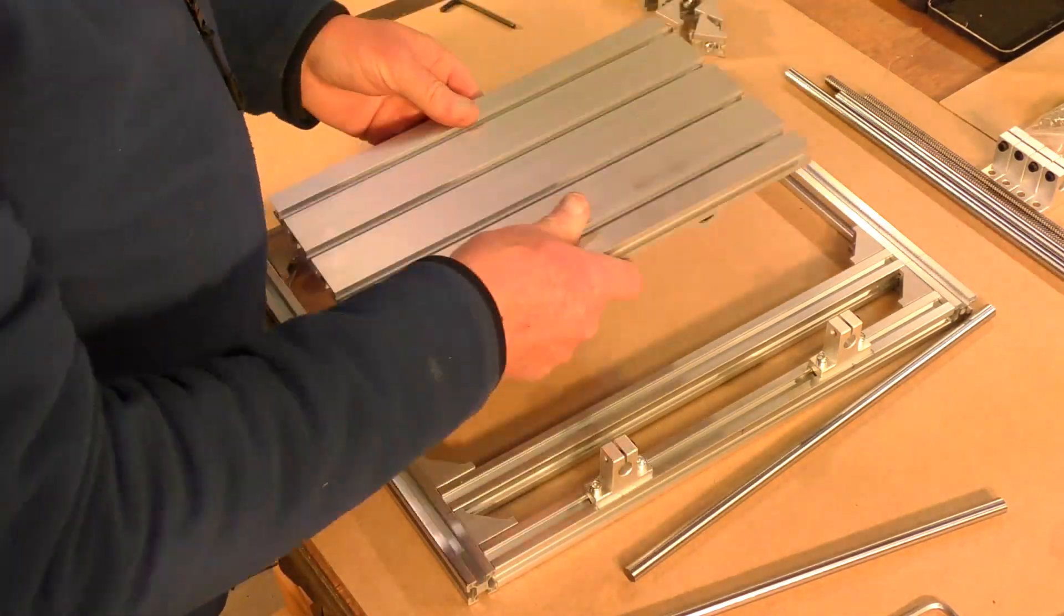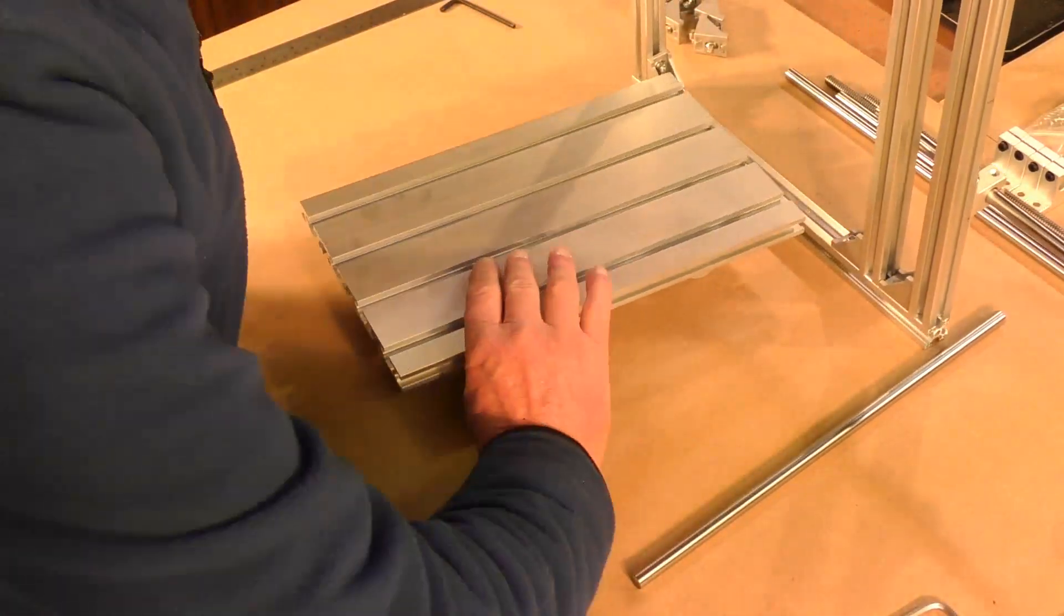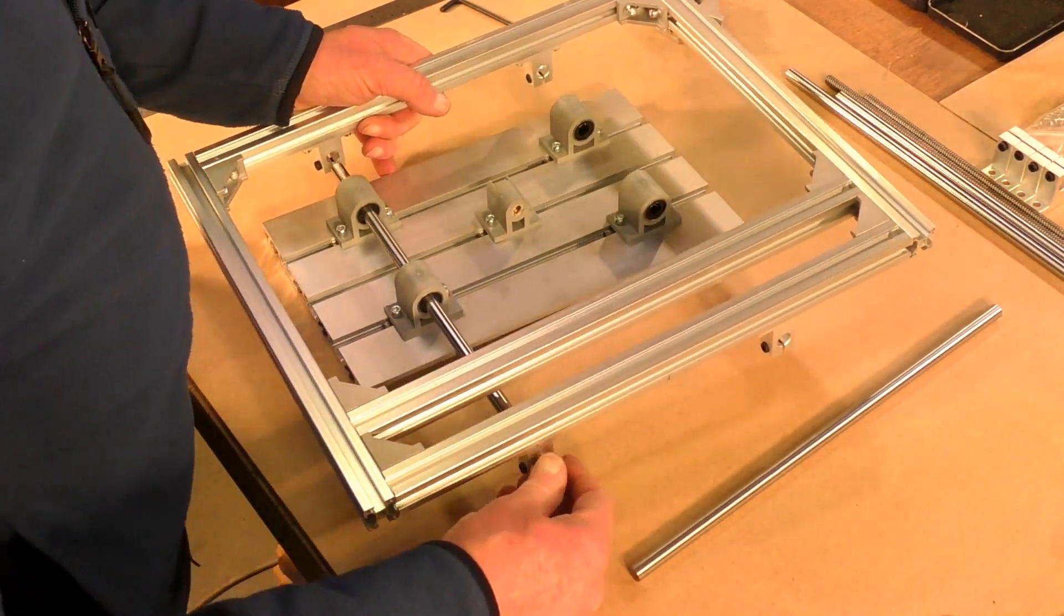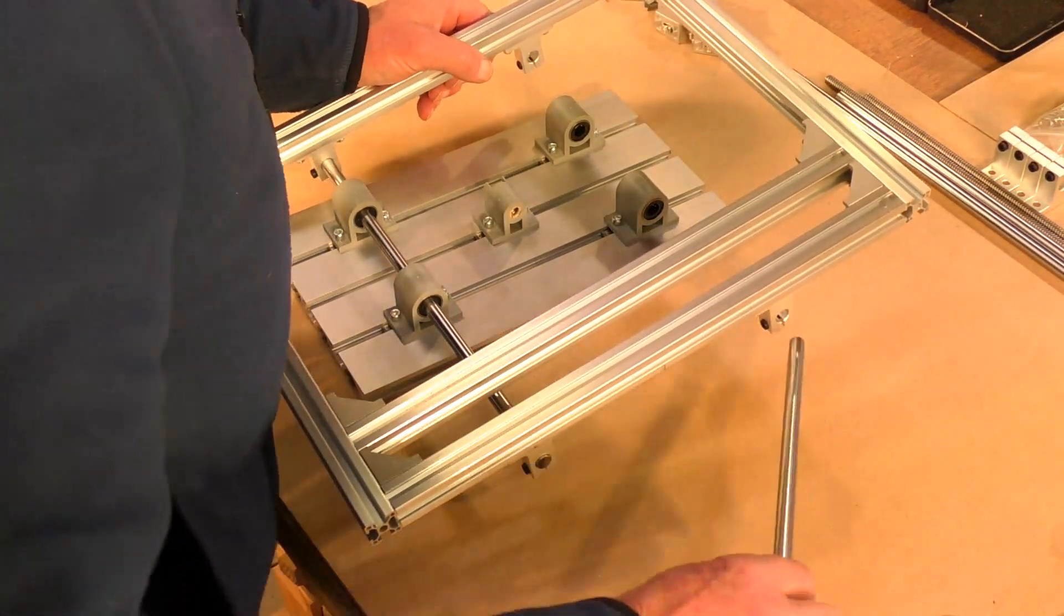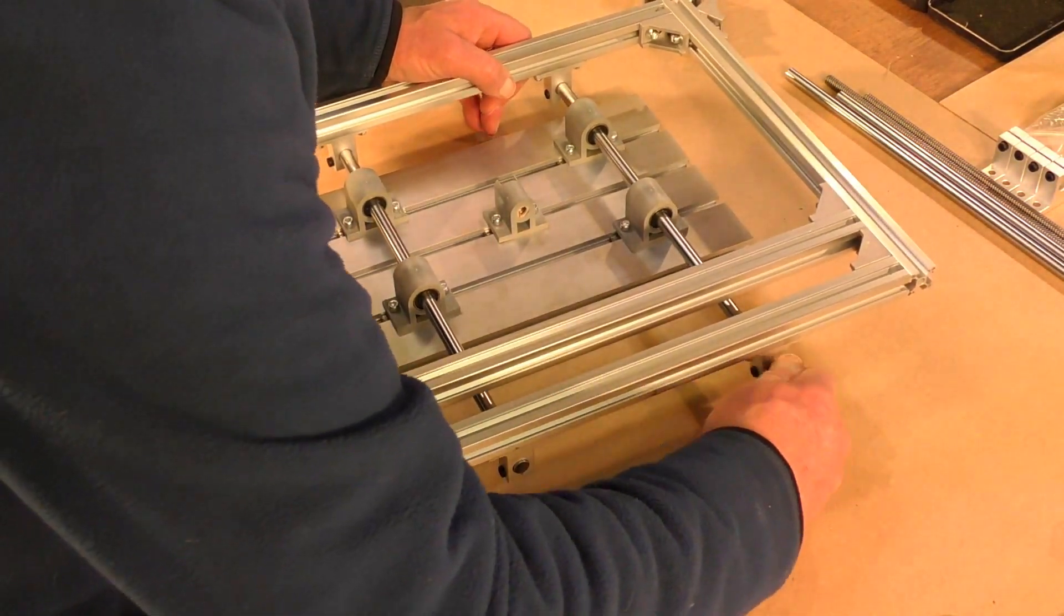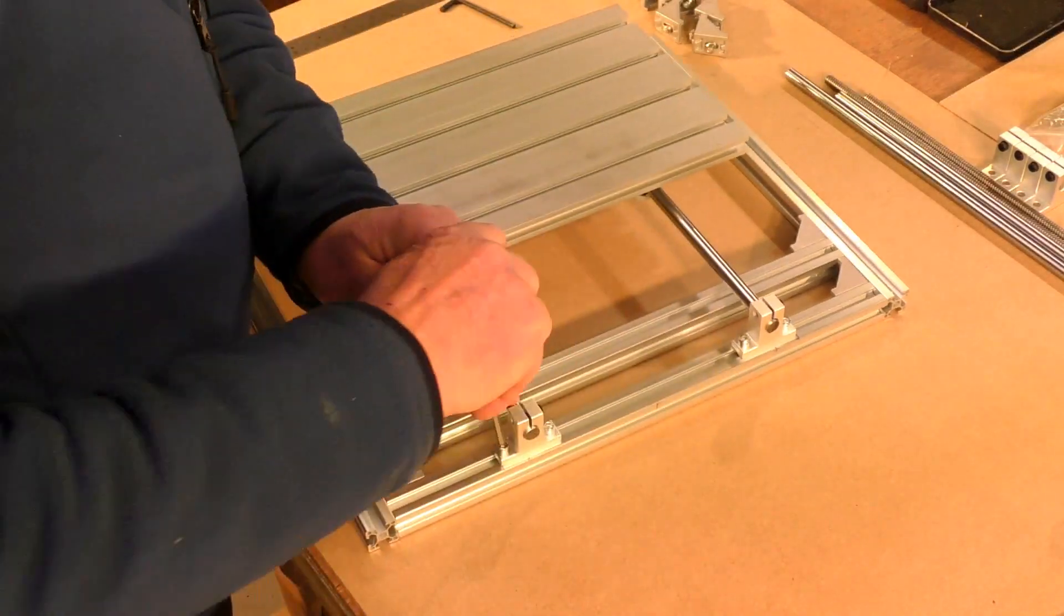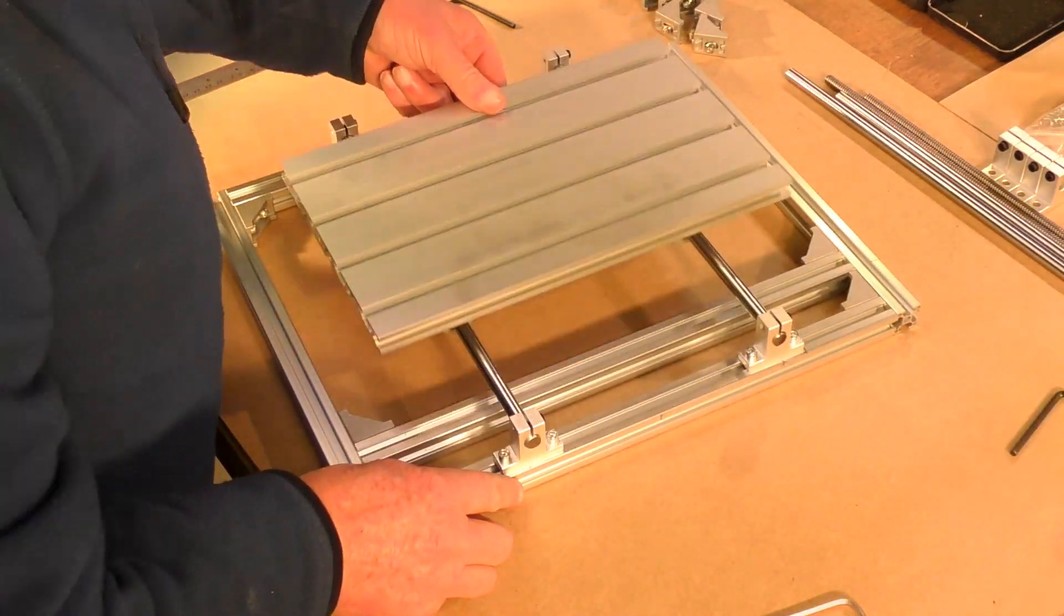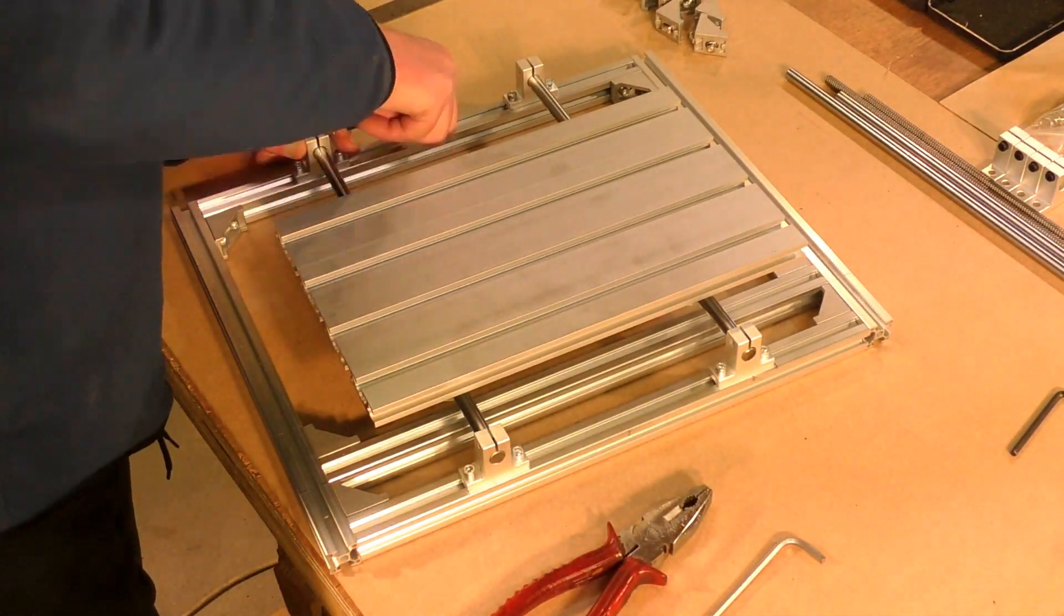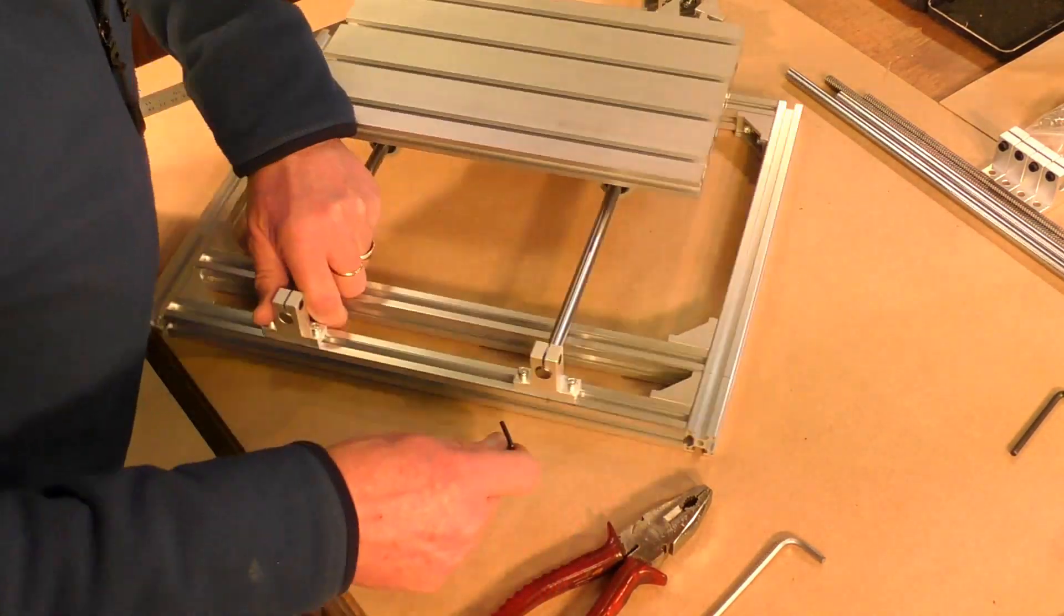So you're just going to make sure that the center bearing block there, the screw thread bearing block, is actually pointed in the right direction. Make sure everything is running freely and then you can lock it all up nice and tight.